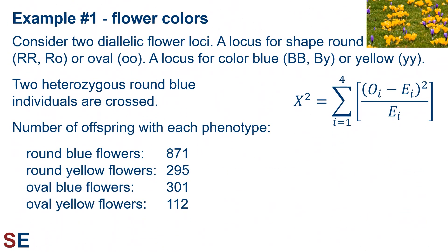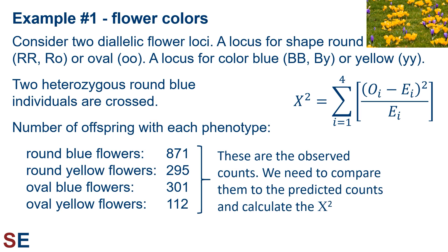Consider two diallelic flower loci with dominant alleles at each. There's one locus for shape with a dominant round allele, such that genotypes RR and RO will have the round phenotype, and genotype OO will have the recessive oval phenotype. There's one locus for color with a dominant blue allele, such that genotypes BB and BY will have the blue phenotype, and genotype YY will have the recessive yellow phenotype. Two heterozygous round-blue individuals are crossed, and we count the number of offspring with each phenotype. We get 871 round blue, 295 round yellow, 301 oval blue, and 112 oval yellow offspring. These are the observed counts, and we need to compare them to the predicted counts and calculate the chi-squared value.